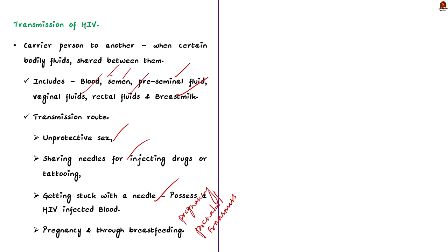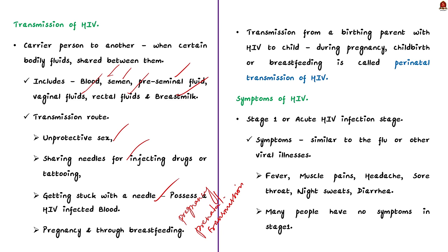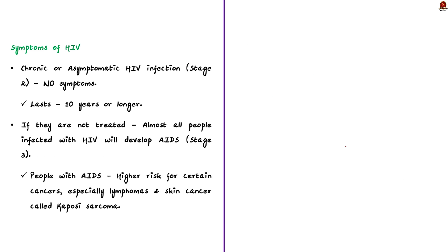HIV and AIDS progress through various stages. In Stage 1, called acute HIV infection, symptoms can be similar to flu or other viral illnesses — fever, muscle pain, headache, sore throat, night sweats, and diarrhea. Many people have no symptoms when first infected. Stage 1 progresses over a few weeks to months to become chronic or asymptomatic HIV infection (Stage 2), which can last 10 years or longer. If untreated, almost all people with HIV will develop AIDS (Stage 3), and are at high risk for cancers like lymphomas and Kaposi sarcoma.